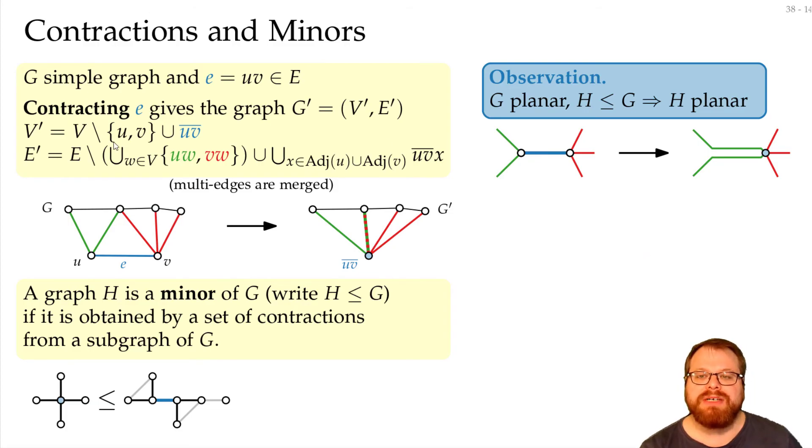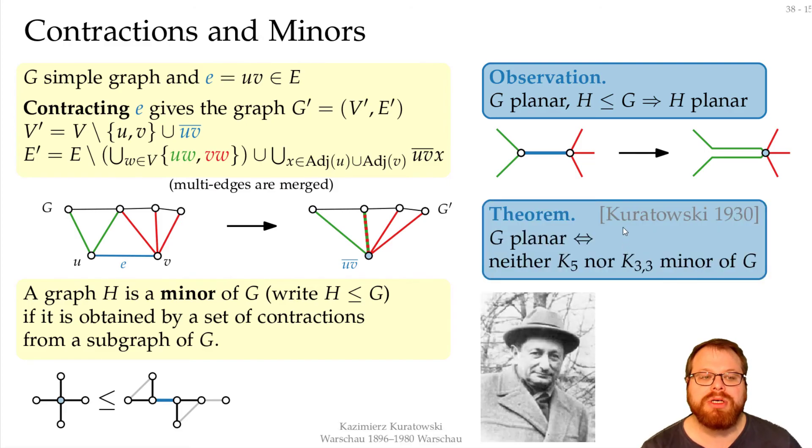And the main reason why we wanted to have this is that this gives us a characterization of planar graphs, namely Kuratowski's theorem, which is very old, from 1930. And he showed that a graph is planar if and only if neither k5 nor k33 are minors of g. So if and only if there is no way to get to these two graphs with only contractions, then you have a planar graph.